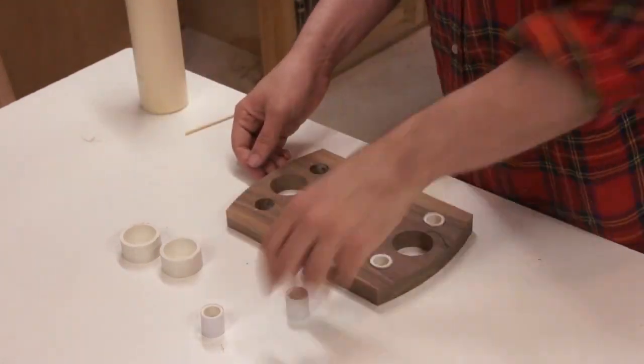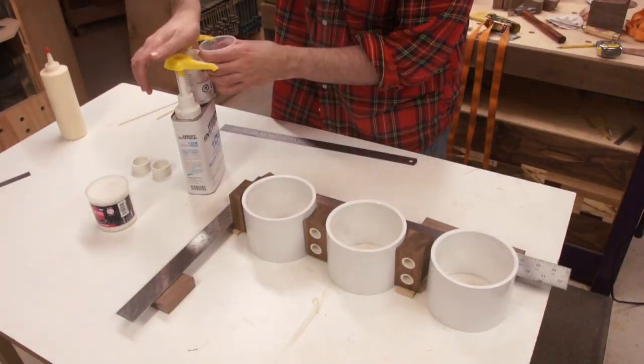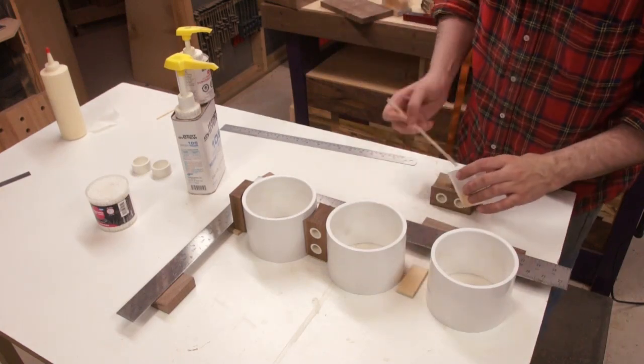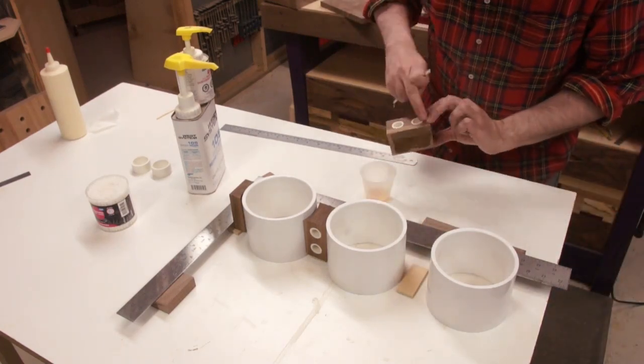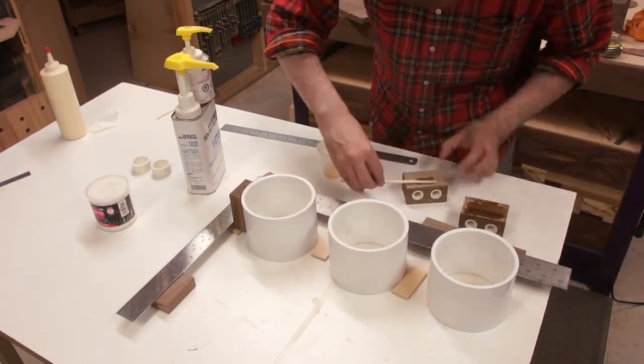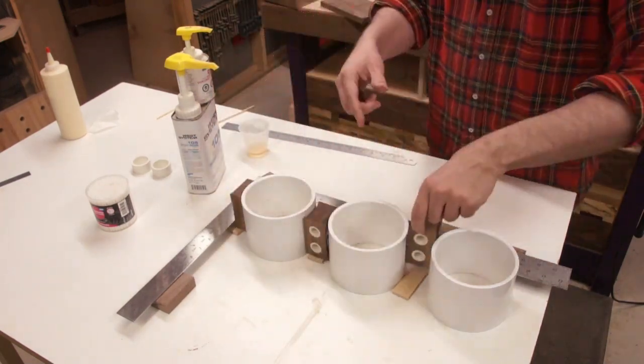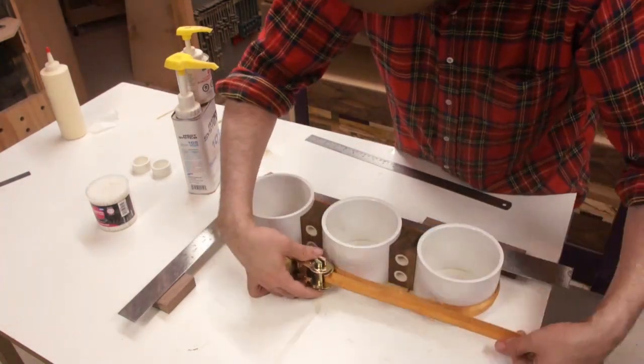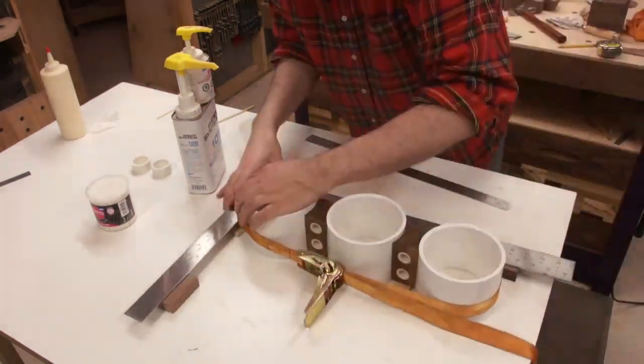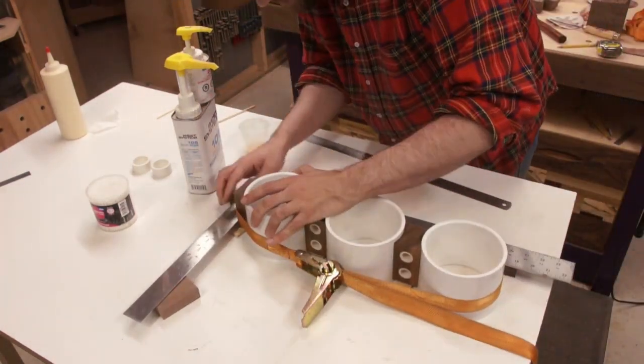So then it was moment of truth time putting it all together. And I used a square to sort of align everything. What I think would have worked better was to sort of clamp two boards on either side. Because when I put the strap clamp on it, it just sort of pushed the middle one out.